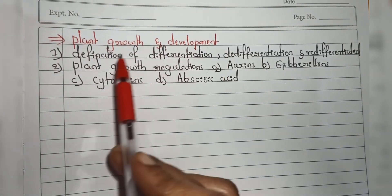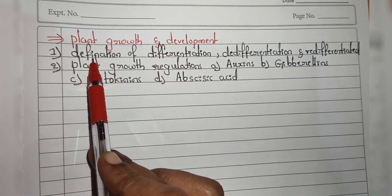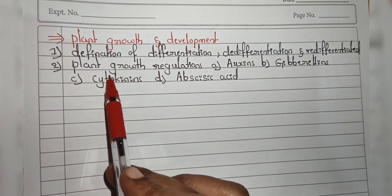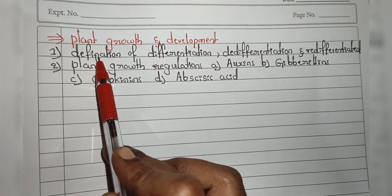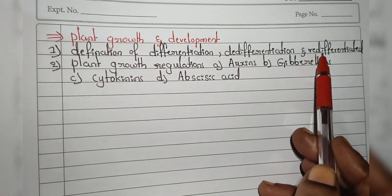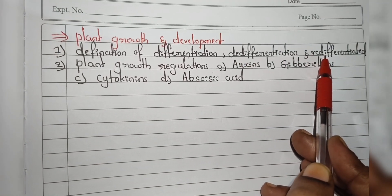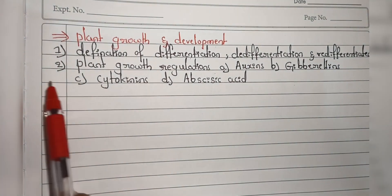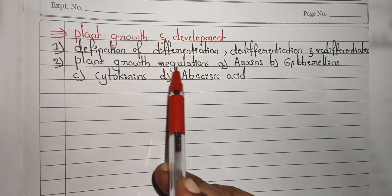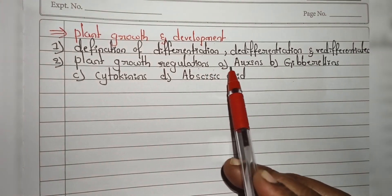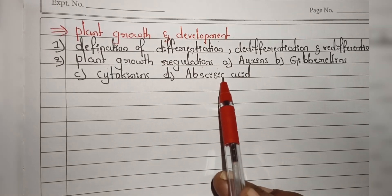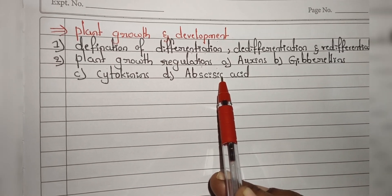Next chapter is Plant Growth and Development. From this chapter, they will ask questions on two main topics. First is the definitions of differentiation, de-differentiation, and re-differentiation. The second topic is plant growth regulators — that is, auxin, gibberellin, cytokinin, and abscisic acid.